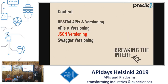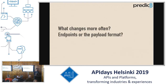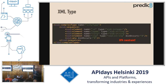Let's continue with JSON versioning. Most APIs now use JSON as a data format, so we'll look at what JSON provides. The first question: what do you change more often — the endpoints or the payload format? When you think about API versioning you think about paths, methods, and status codes, but actually more often you change the data format, and you have to stay compatible there. Let's look back at XML.